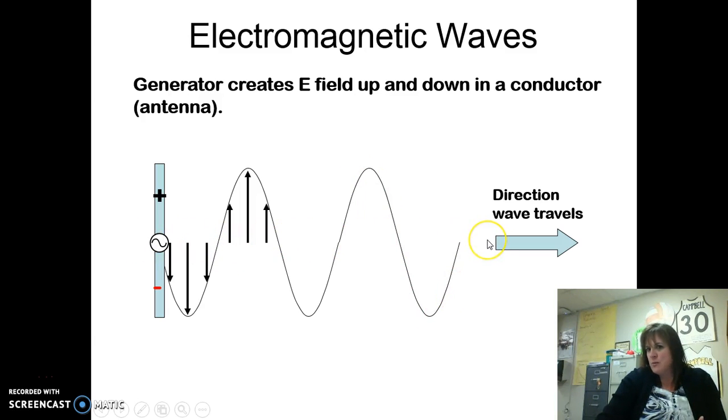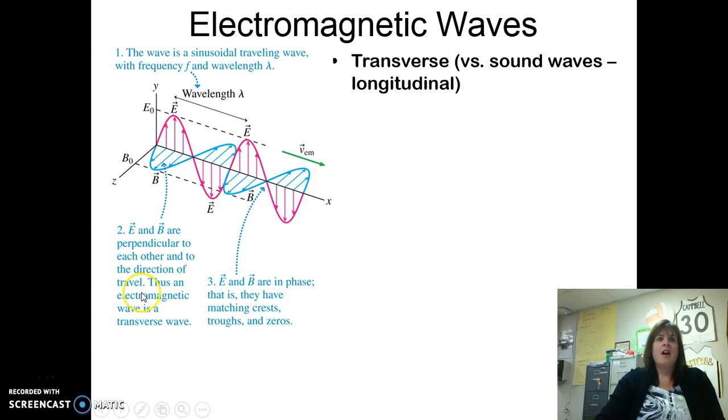Notice that the sine wave travels this way, which makes it a transverse wave. Transverse waves, the medium is oscillating, well the medium, in this case my electric fields or magnetic fields, are oscillating up and down, but it's traveling that way.